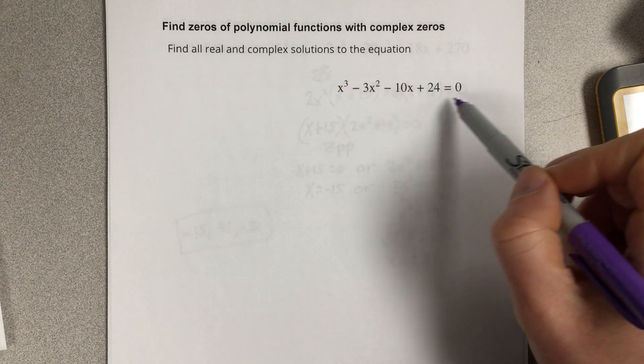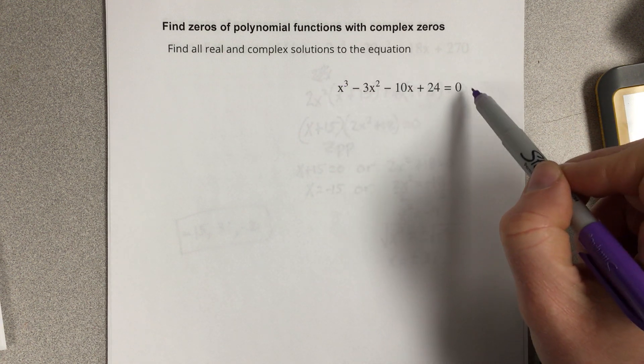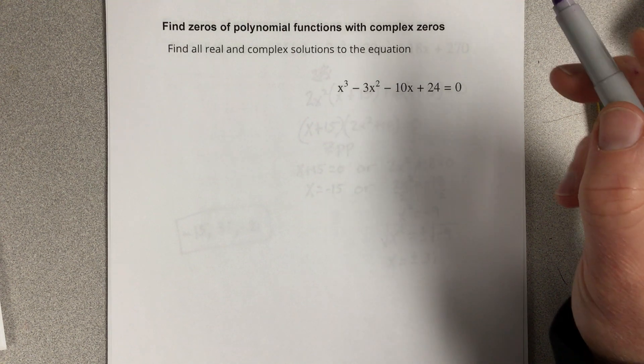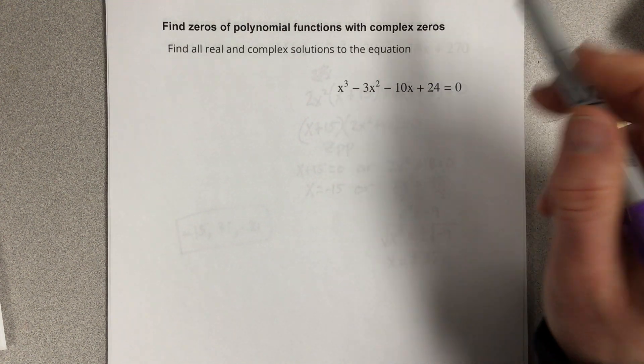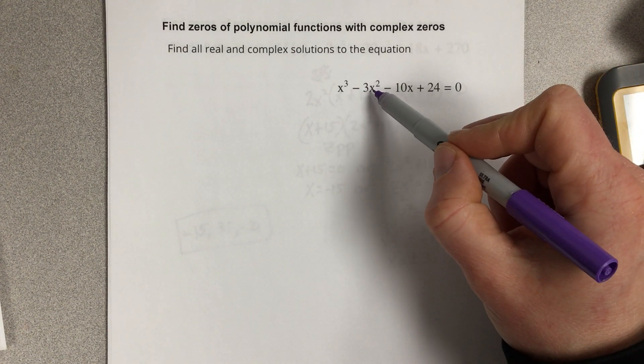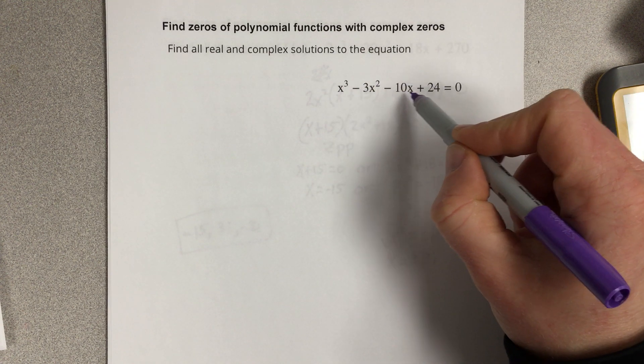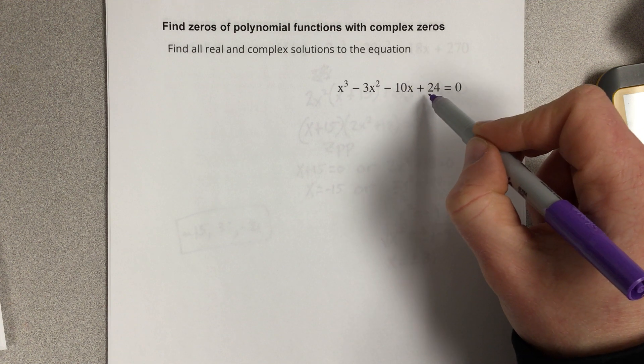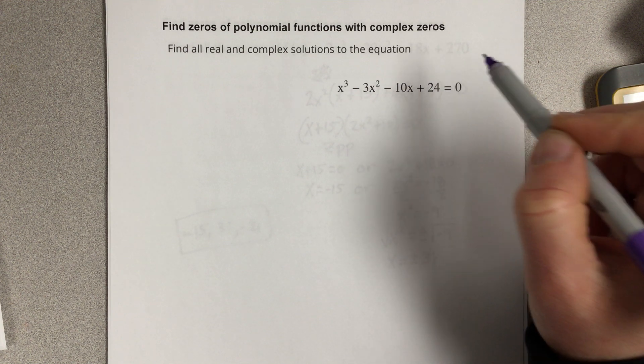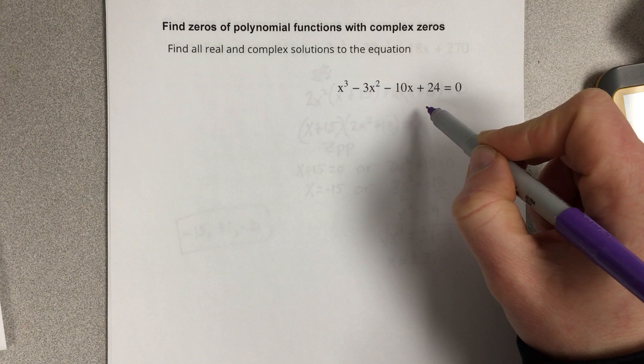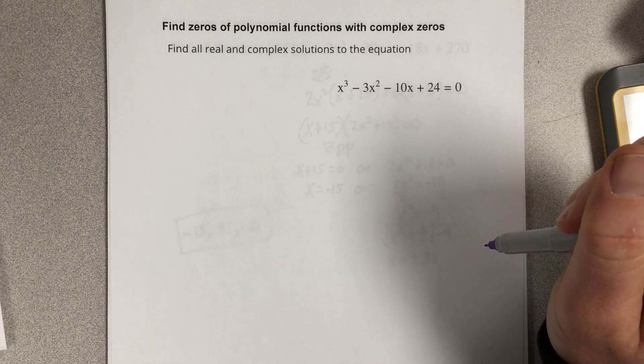Let's say cubic. So to find these solutions, we're going to try to factor by grouping. But you can notice that if I take out x² in the first two terms, I would get x - 3. There's nothing I can take out of -10x + 24 to end up with x - 3. So factor by grouping is not going to work.